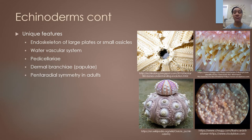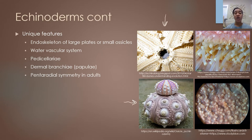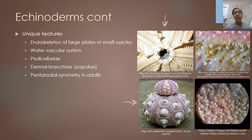Phylum Echinodermata is a group of very unique organisms with features found only in echinoderms. One of which is the presence of an endoskeleton made of either large or small calcified plates called ossicles. The top picture shows ossicles from a starfish and the bottom picture shows ossicles from a sea urchin. The starfish ossicles are much more porous, while the sea urchin's are far more compact, but all echinoderms have these ossicles.